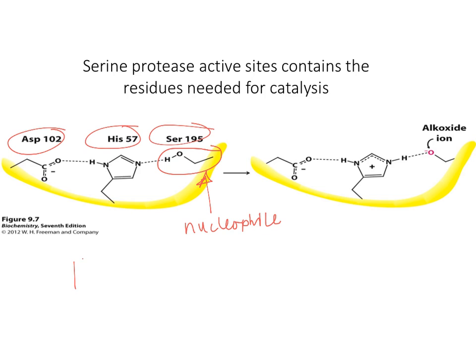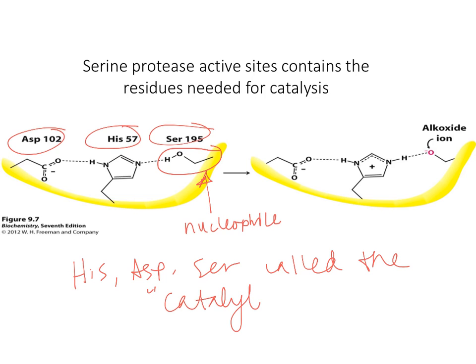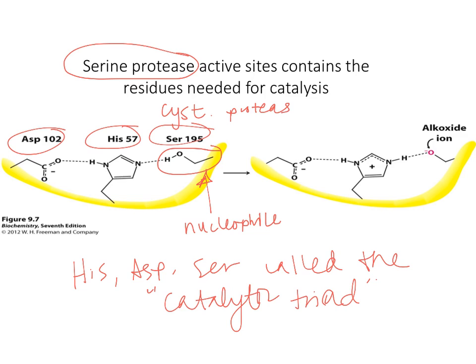Histidine, aspartic acid, and serine are called the catalytic triad — tri- meaning three. All serine proteases — chymotrypsin, trypsin, elastase — must have this serine. If it were a cysteine protease, you'd still have aspartic acid and histidine, but instead of serine with an OH, you'd have a cysteine with an SH.